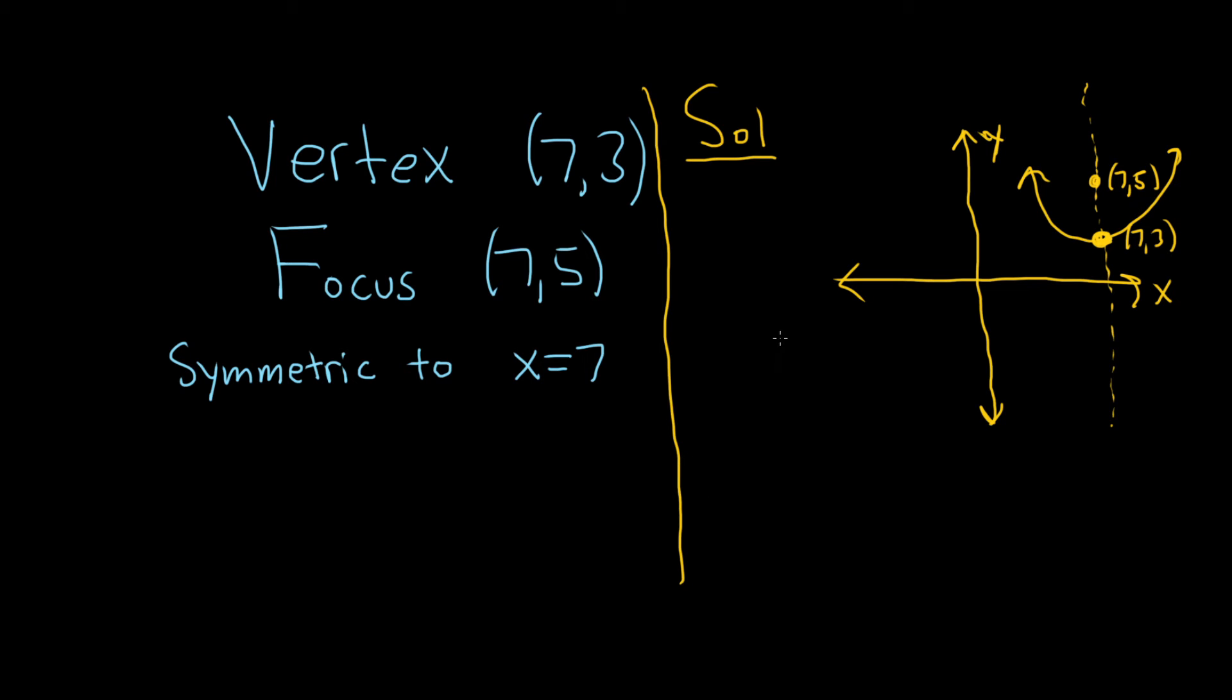The equation for a parabola that opens up or down has the x being squared. So in this case, it opens up, so our x is being squared. That equation is (x minus h) squared equals 4c times (y minus k).